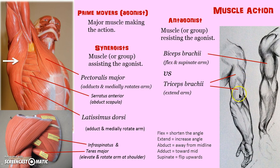The tricep brachii is going to be an extensor. Now if we want to extend our arm, then the tricep is the agonist — the prime mover — and the antagonist is the bicep. So they can switch off.